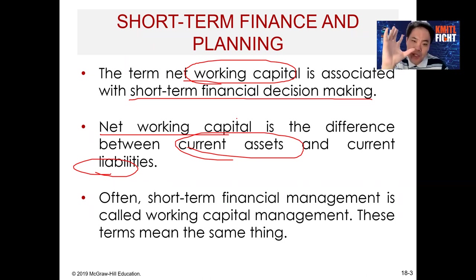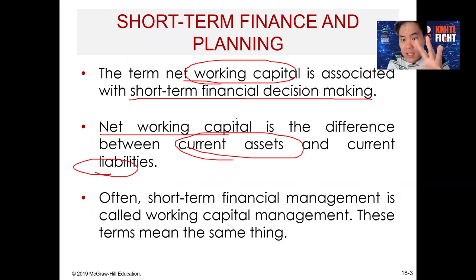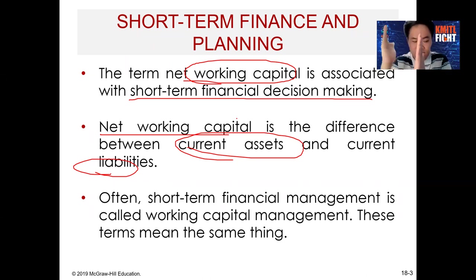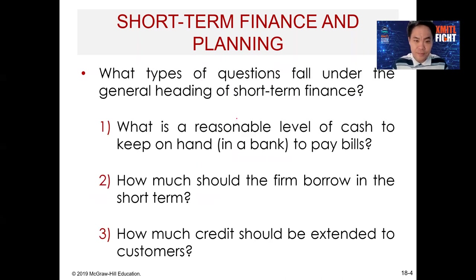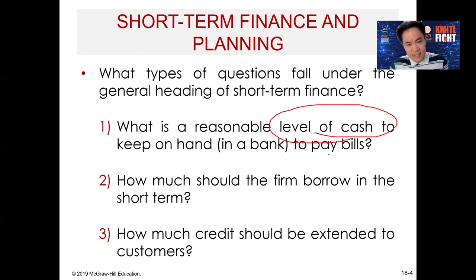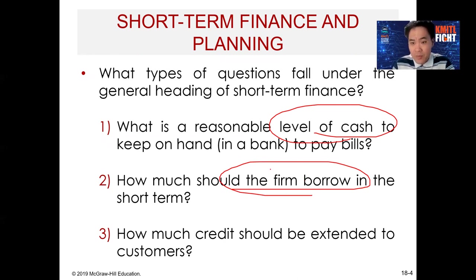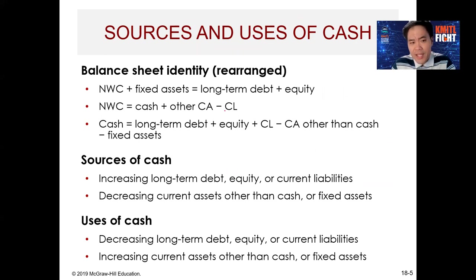Short-term means within one year; long-term means anything beyond that one-year period — that is the threshold separating the two. The key questions in this chapter are: what level of cash should the firm keep on hand, and how much should the firm borrow? The last topic we will discuss is what we call the cash budget.